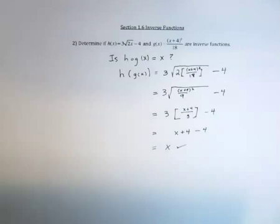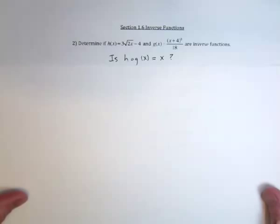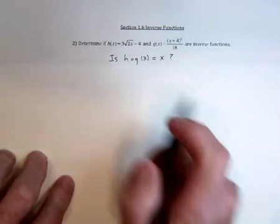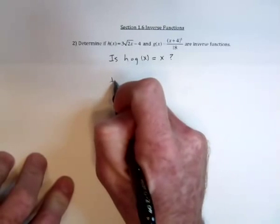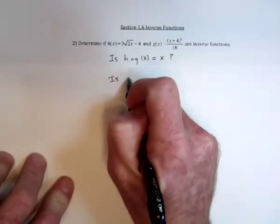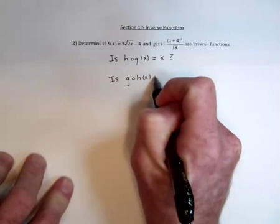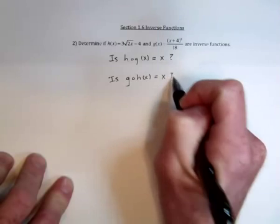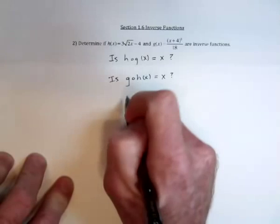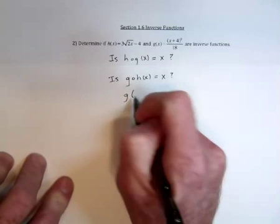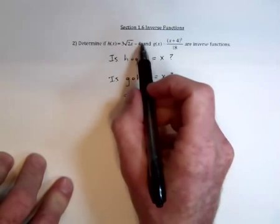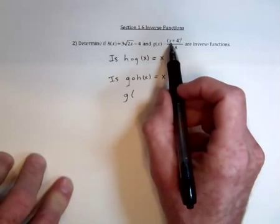But technically, we do need to check the other way around. Now, if you reverse the operations, are they going to cancel each other out the other way? Is g composed with h of x also equal to x? So that would be the h function, all of this, gets substituted into the g function over here.